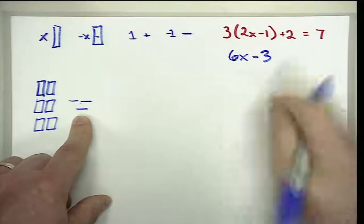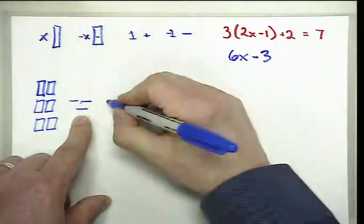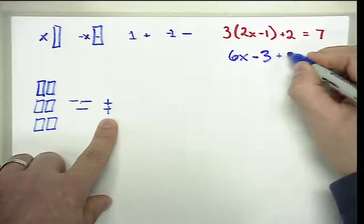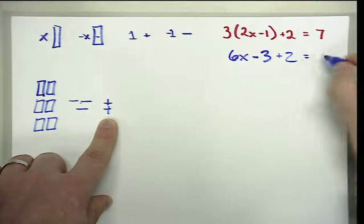And so that would be 6X minus 3. And then of course we had a plus 2, so that would be two positives, and that would just be plus 2. And all that is equal to 7.